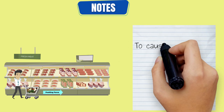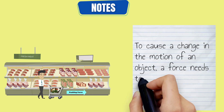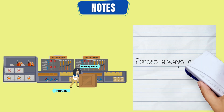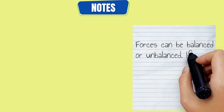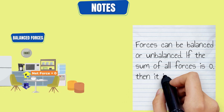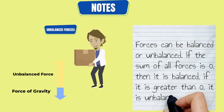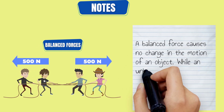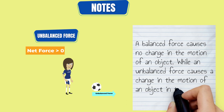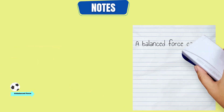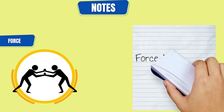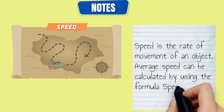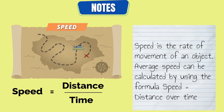Let's review what we just learned. To cause a change in the motion of an object, a force needs to be applied. Forces always come in opposite pairs and can be balanced or unbalanced. If the sum of all forces is zero, it is balanced; if greater than zero, it is unbalanced. A balanced force causes no change in motion, while an unbalanced force causes a change in the direction of the greater force. Force is measured in newtons. Speed is the rate of movement of an object, and average speed can be calculated using the formula: speed equals distance over time.